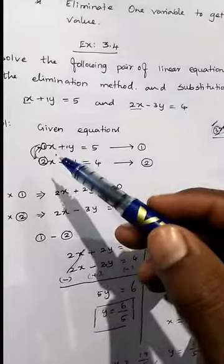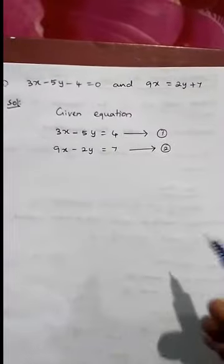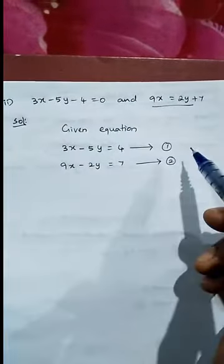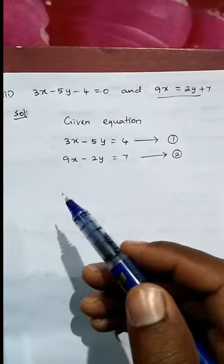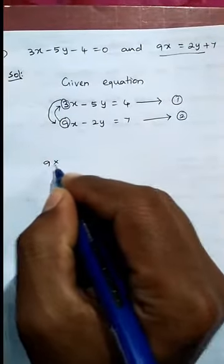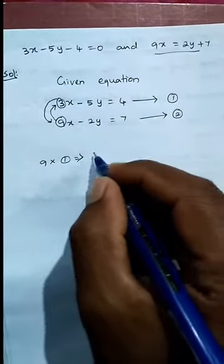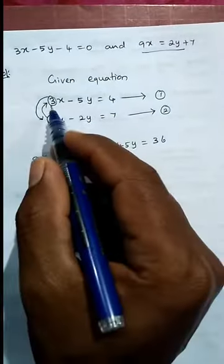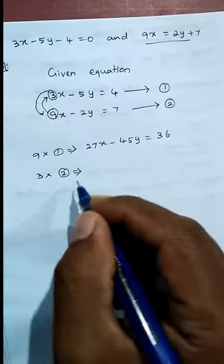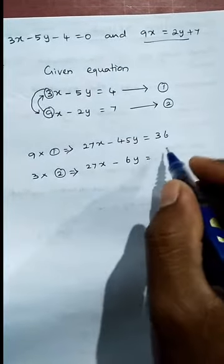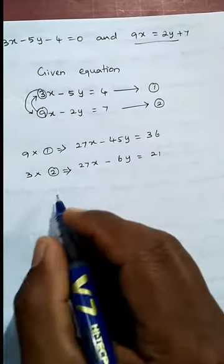Now let's see one more question where the coefficients are different. In this question — option number three — the constant term is on the left-hand side, so move it to the right and convert to standard form. Now to make the coefficients equal, take 9 and multiply with equation 1, and take 3 and multiply with equation 2. So 9 times equation 1 gives 45x, 55y equal to 36. Then 3 times equation 2 gives 27x minus 6y equal to 21. Both x-coefficient symbols are positive, so we subtract.